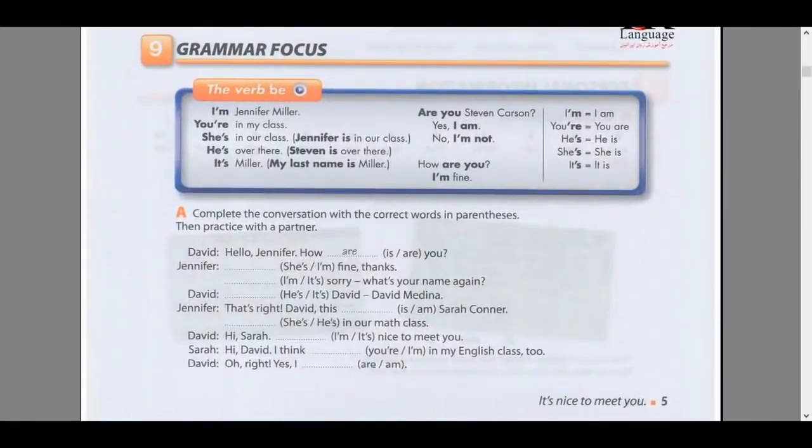Page 5, Exercise 9, Grammar Focus: The verb be. I'm Jennifer Miller. You're in my class. She's in our class. Jennifer is in our class. He's over there. Stephen is over there. It's Miller. My last name is Miller. Are you Stephen Carson? Yes, I am. No, I'm not. How are you? I'm fine. Contractions: I'm equals I am, you're equals you are, he's equals he is, she's equals she is, it's equals it is.